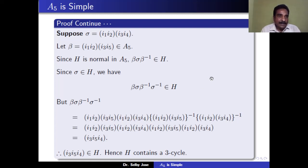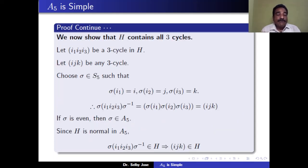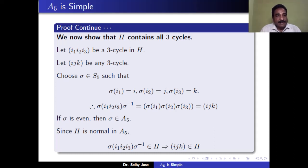So we have proved that whatever the cycle structure of σ — whether it is a 3-cycle, a 5-cycle, or a 2-2 cycle — we can always construct a 3-cycle which is an element of H. Therefore H contains a 3-cycle. Now we show that H contains all 3-cycles. Let (i1, i2, i3) be the 3-cycle in H, and let (i, j, k) be any arbitrary 3-cycle.